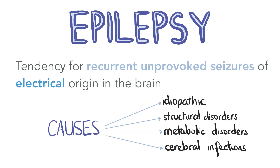Finally, let's talk about epilepsy. Epilepsy is a condition where there's a tendency for recurrent unprovoked seizures of electrical origin in the brain. For a diagnosis of epilepsy to be made, there must have been at least two unprovoked episodes 24 hours apart. Usually epilepsy is idiopathic, although it can be attributed to genetic causes, structural disorders, metabolic disorders and cerebral infections like HIV, TB and cerebral toxoplasmosis.